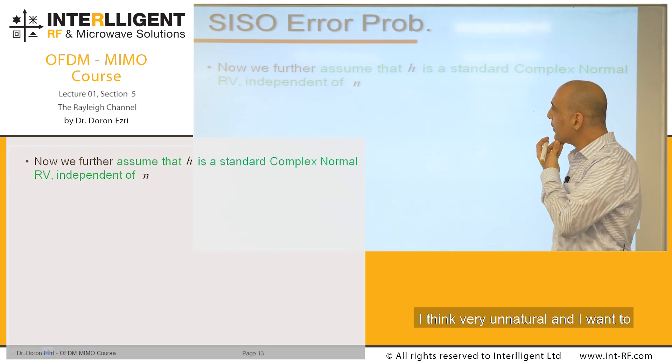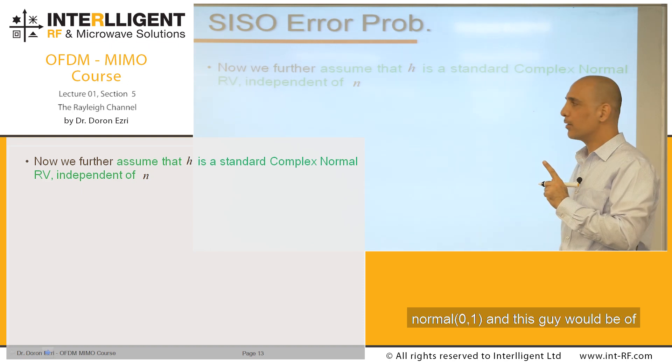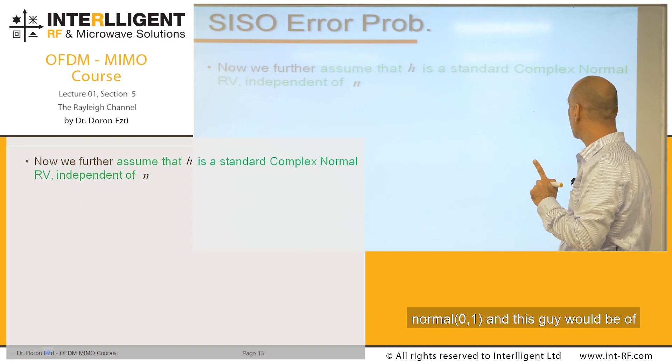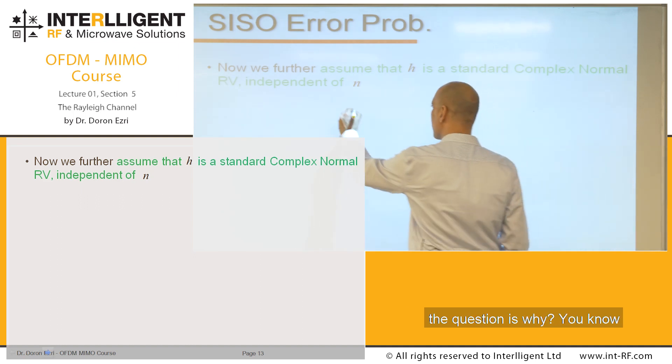I think very unnatural, and I want to assume that H itself is complex normal (0,1), and this guy would be independent of the noise. But the question is why?